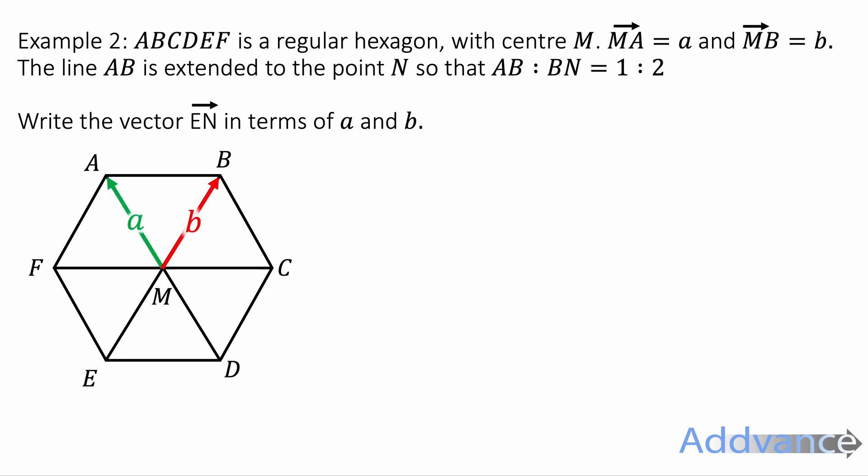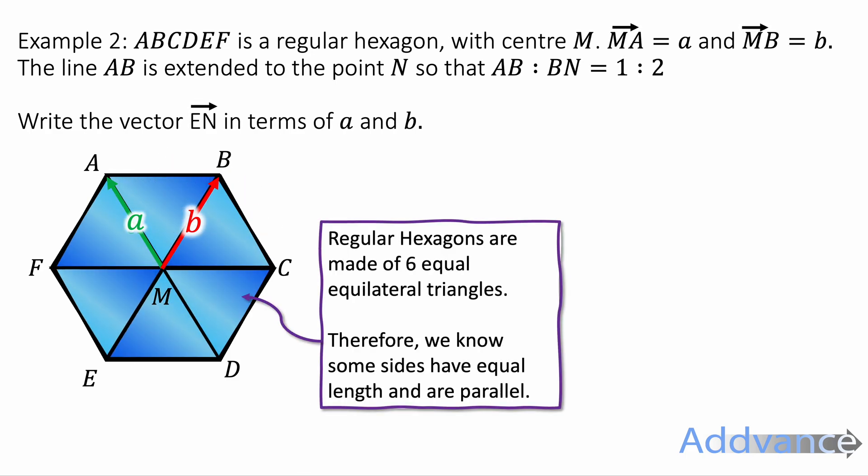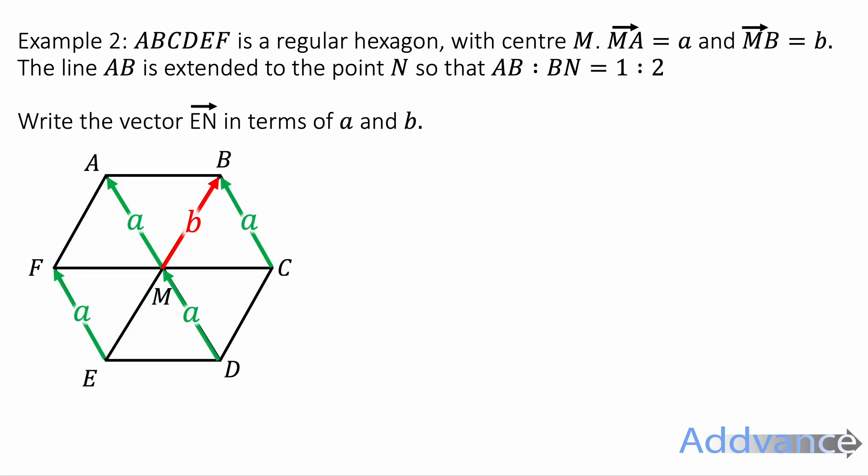Okay, we're told that MA is a, MB is b. We also know that regular hexagons are made of six equilateral triangles. So all these six triangles here are the same. Because we know that all those equilateral triangles are the same, we know that the matching sides of those triangles will also be the same length. This is a key idea because quite often in vector equations you might be given regular hexagons. So the vector a like that, they're all the same. And the vector b like this, they're all the same.